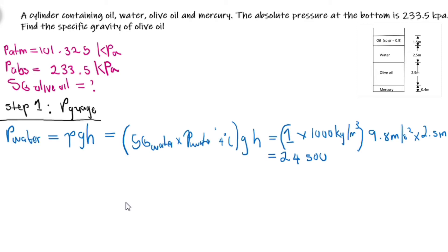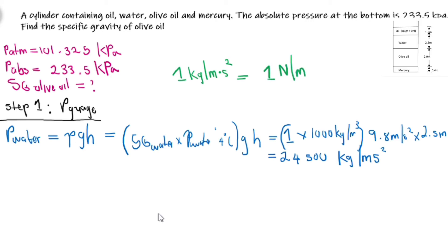If you can see the units that we have here, it is kilograms per meter squared. For conversion, we know that 1 kilogram per meter second squared is the same as 1 newton per meter squared, which is also the same as 1 pascal. So basically here we have pascal. I am going to convert this to kilopascal by simply dividing by 1000, and we will have 24.5 kilopascal. We can do the same thing for oil and mercury.